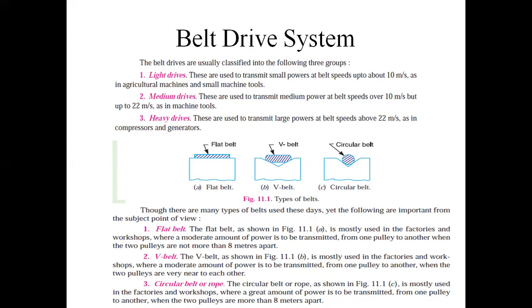The applications of light drives are in agricultural machines and small machine tools. In medium drives, the power transmission speed is over 10 meters per second but below 22 meters per second — for example, in machine tools. In heavy drives, power is transmitted where the belt speed is above 20 to 22 meters per second, for example in compressors or generators.